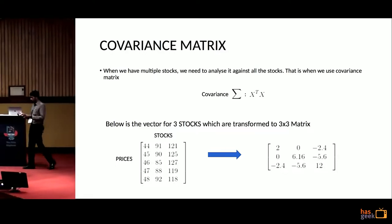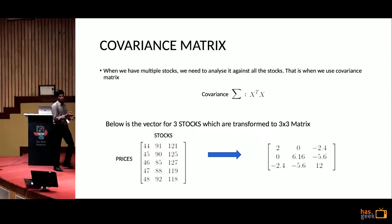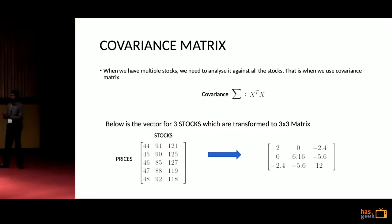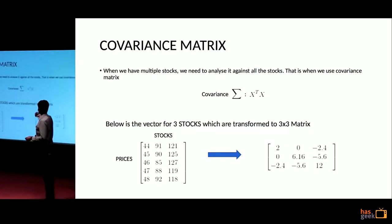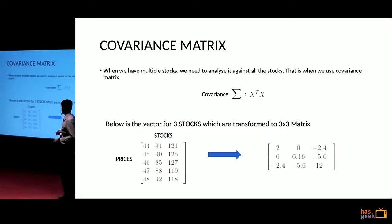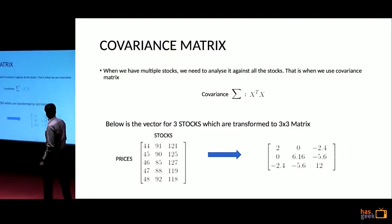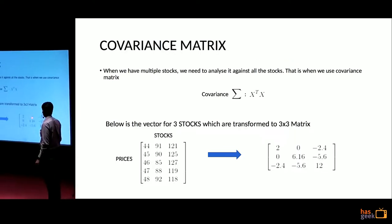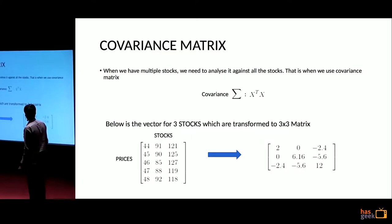We have done it for one stock, but we would like to relate stocks to each other. That is where the concept of the covariance matrix comes into the picture. Variance is the deviation from mean squared. The same can be applied to multiple stocks. If you take a matrix with stocks as columns and prices as rows and apply the covariance matrix, you get a matrix showing relationships — for example, stock 1's relationship to stock 3 is -2.4. The diagonals relate to the variance of a stock with itself.